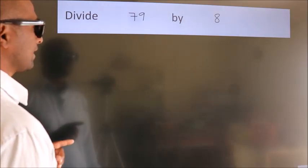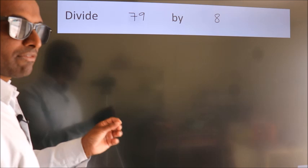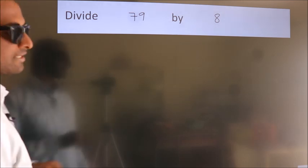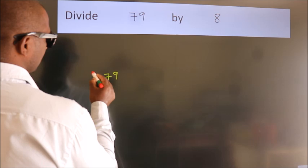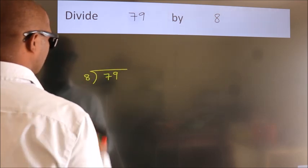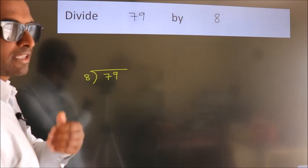Divide 79 by 8. To do this division, we should frame it in this way: 79 here, 8 here. This is your step 1.